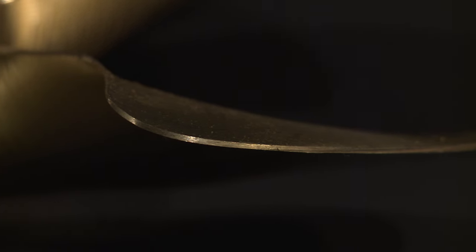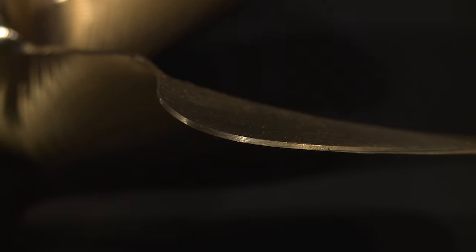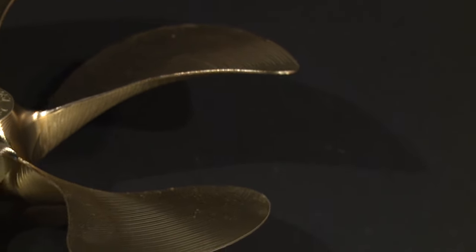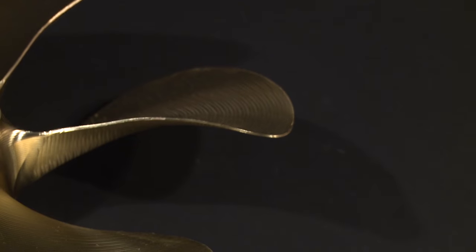100% CNC processed, the CNC machined 2257 means the propeller delivers the most accurate diameter, pitch, cup, rake, balance and more.